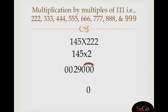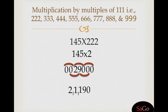0 and 0 makes 0, write 0. 0 and 9 makes 9, write 9. 0 and 9 and 2 makes 11, write 1 and give 1 for the carry. 9, 2, and 0 gives 11, write 1 and give 1 for the carry. 2, 0, and 0 gives 2, write 2.